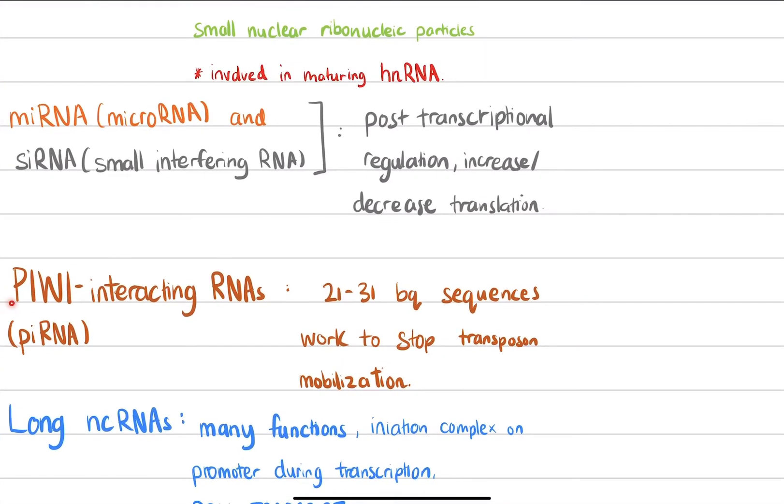We have PIWI-interacting RNAs. These are 21 to 31 base pair sequences, and they work to stop transposons from mobilizing. This is one of the mechanisms used to stop transposons from jumping around, which can cause mutations as we talked about in previous videos.